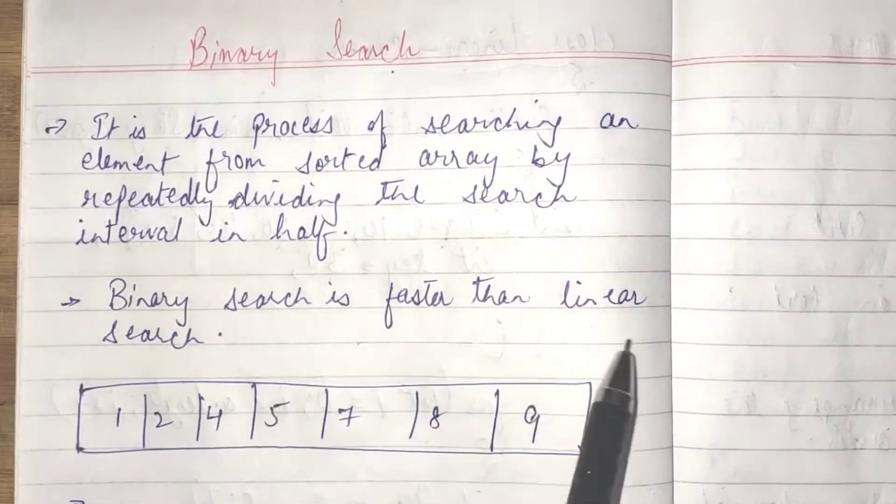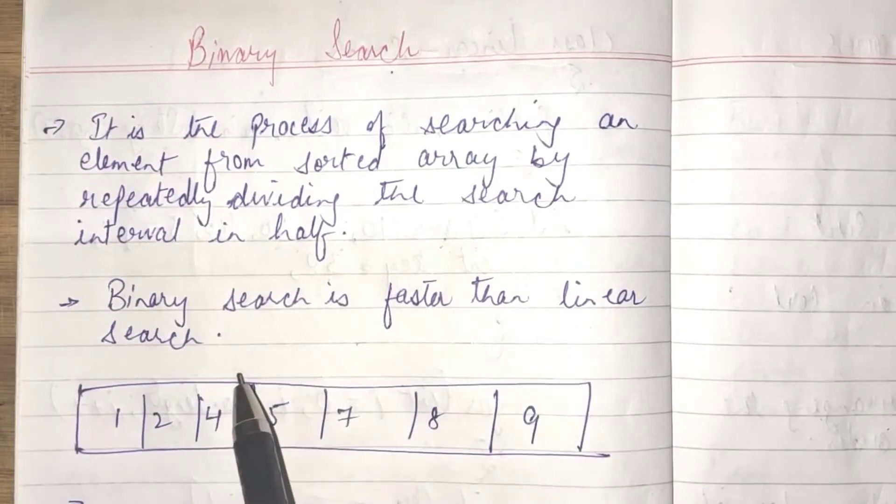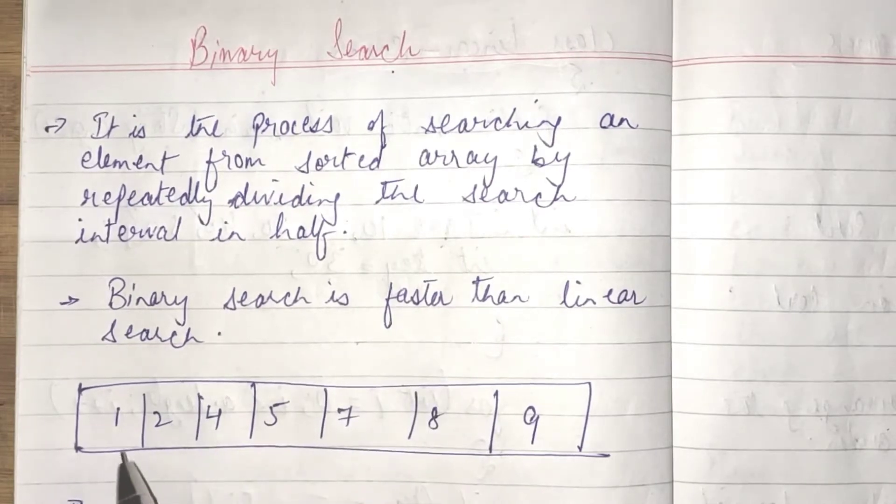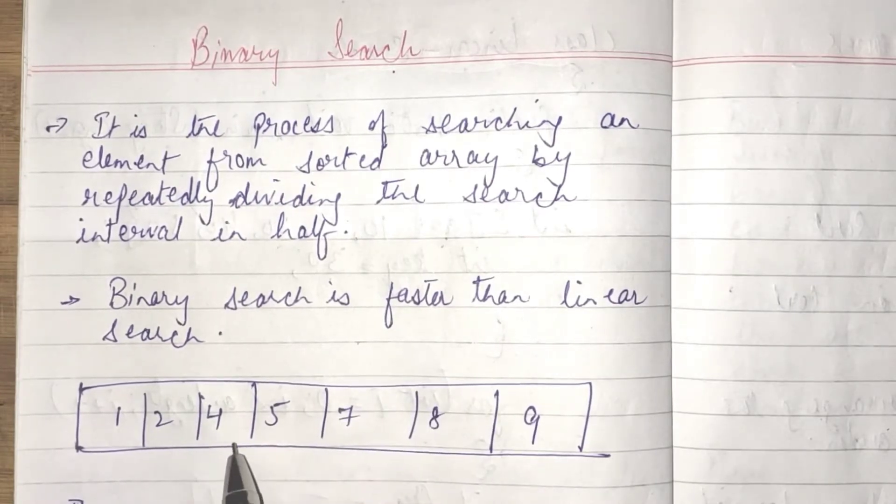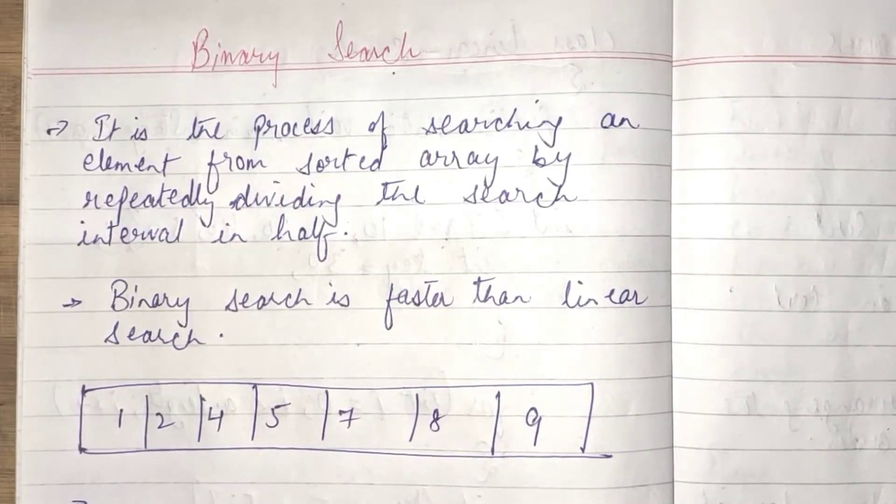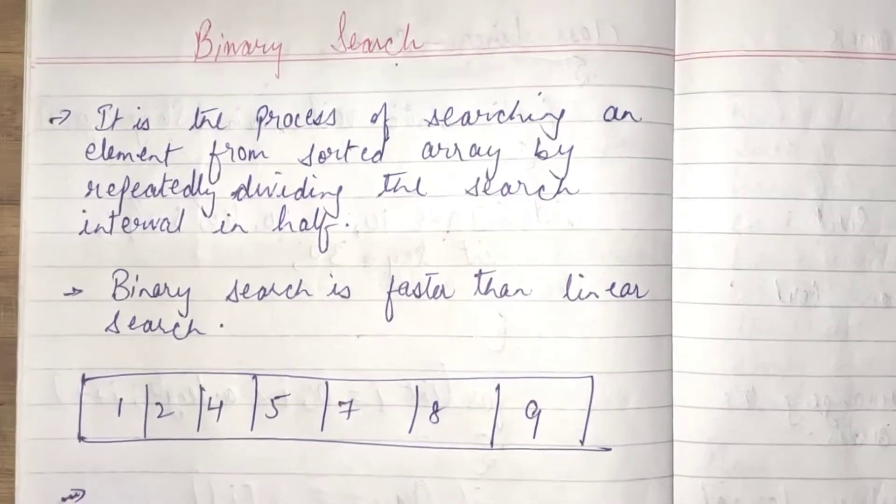Binary search is faster than linear search. Why? Because in linear search, we have to look after all the elements in a sequence wise and repeatedly we have to search the element until we found the element. But here we are dividing the list into the two parts.